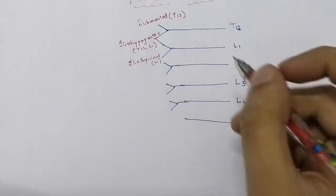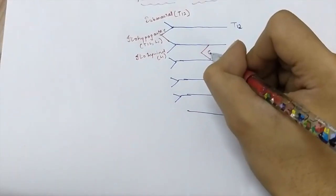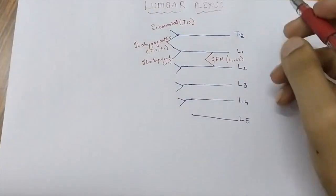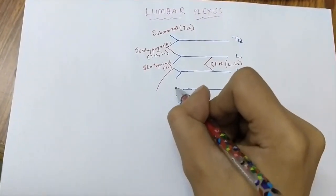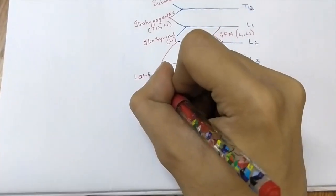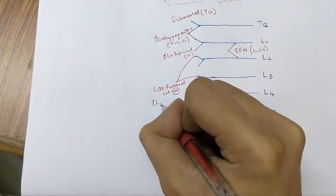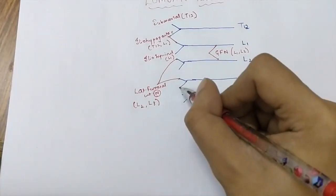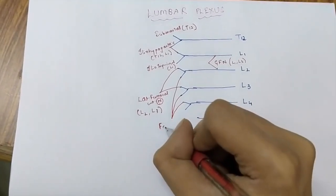That is L1. Now, join the upper part of L2 and upper part of L3. These two together form the lateral femoral cutaneous nerve — that is L2, L3 and L4. Now the lower portion of L3, L2 and the upper portion of L4 — these three together form the femoral nerve.